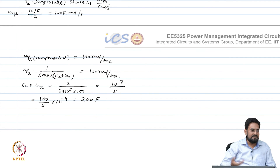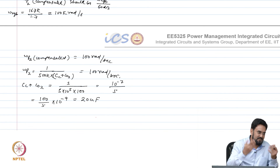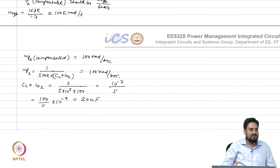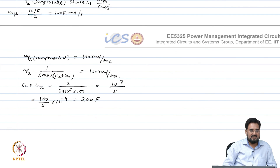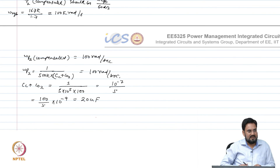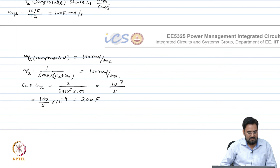Without Miller compensation you might need around 100 picofarad; with Miller compensation you might get down to 10 picofarad — that is the difference. Even without Miller you can compensate since 100 picofarad is possible on-chip, but the area will be much larger, which is why we use Miller cap to reduce area. We take the case where the capacitor requirement is in the order of hundreds of picofarads or maximum 1 nano farad, then see how Miller compensation can further reduce that cap. After that, more compensation techniques will be discussed.